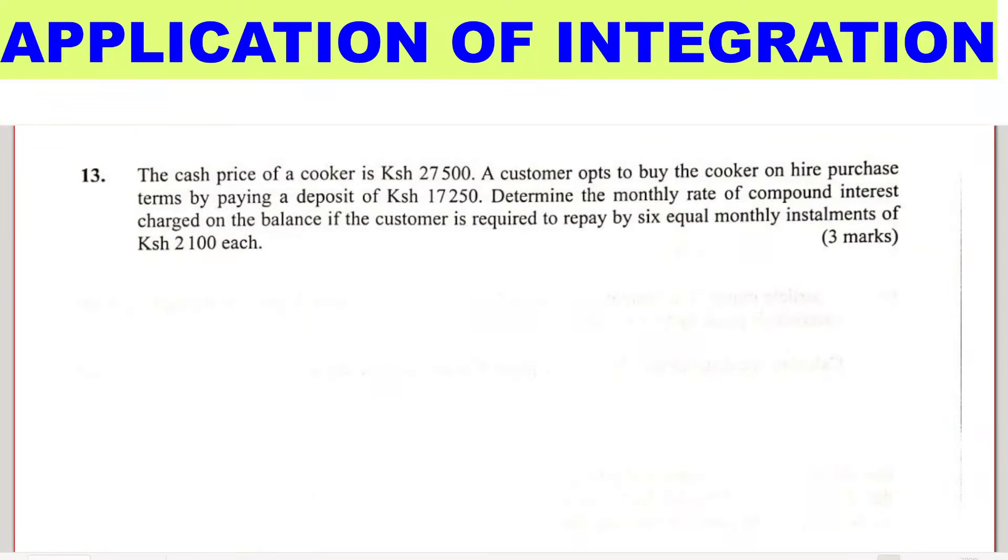Let's look at this question on hire purchase and compound interest. The cash price of a cooker is $27,500. A customer opts to buy the cooker on hire purchase terms by paying a deposit of $17,250.